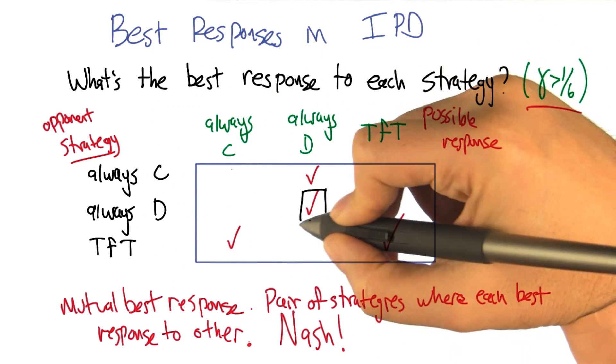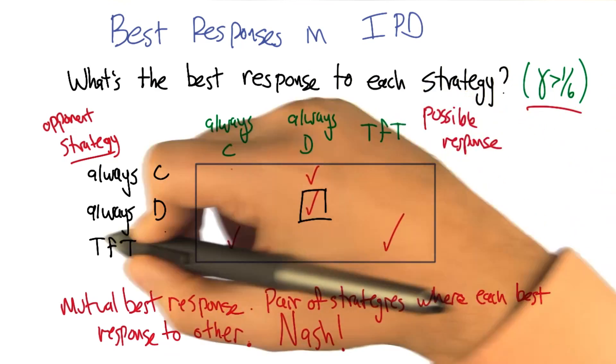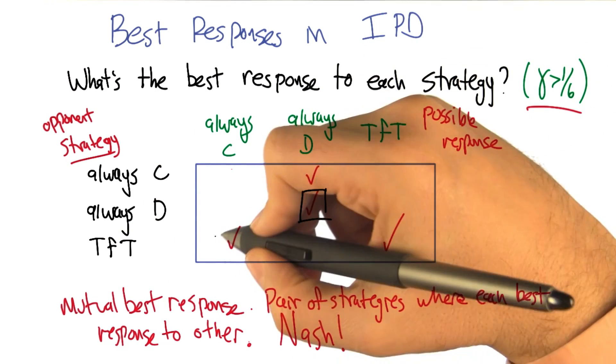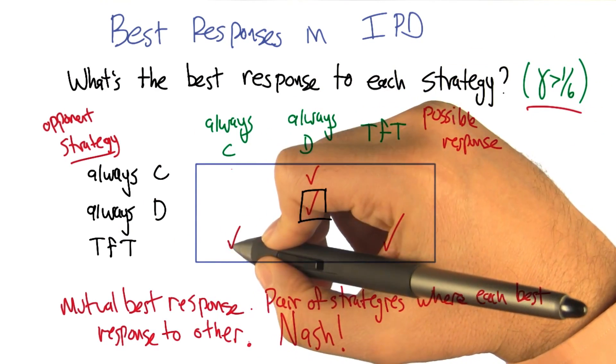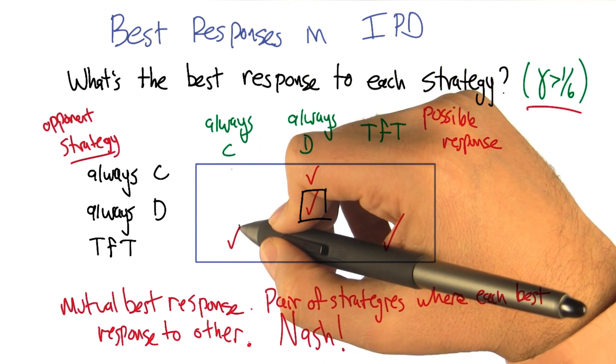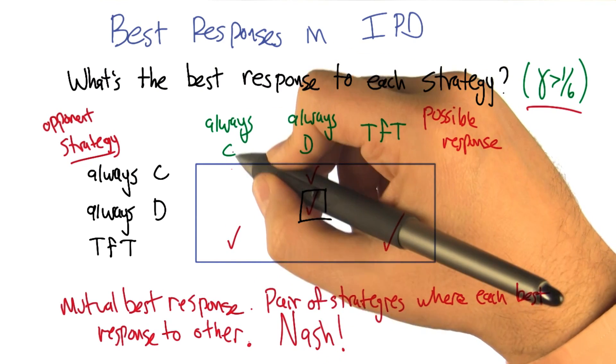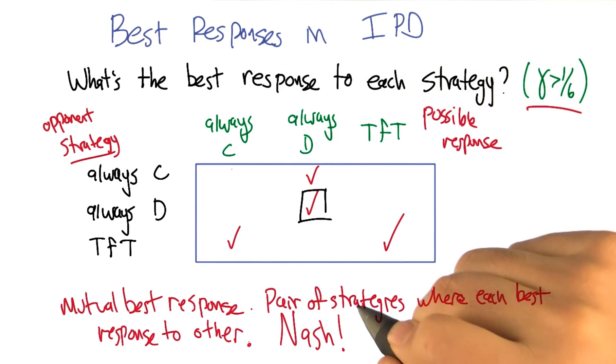But what about always defect versus always defect? No, it is. So that's a Nash, right? Yep. Because they're both doing the thing that is the best response to the other. Right. All right, this box here, always cooperate against tit for tat. That's not okay, because if a player does always cooperate, it's always better to switch to always defect.